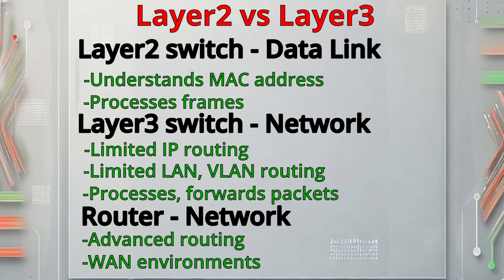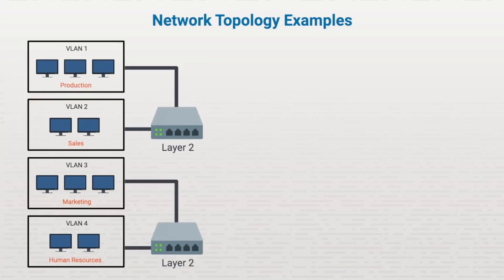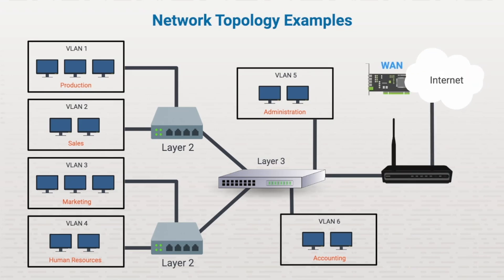Layer 2 switches, Layer 3 switches, and routers can all be used together in a large network. For example, multiple VLANs can be connected to Layer 2 switches that are connected to a Layer 3 switch, which may also have some VLANs connected to it. Then the Layer 3 switch is connected to a router, which is connected to the internet via a WAN interface. This is just an example of how switches can provide your network with optimal security, functionality, and speed.